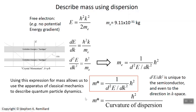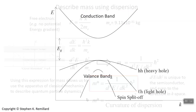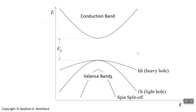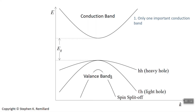Now let's go back to the energy band diagram of a semiconductor. This is a direct gap semiconductor, but all of this discussion is equally applicable to direct and indirect gaps. So we have the conduction band up here, and then there's the band gap, E sub g, and then there are multiple valence bands, including one that seems offset. They're all legitimate valence bands: the heavy hole, light hole, and spin split off band.